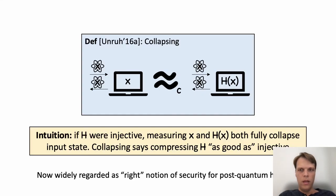When moving to quantum, it turns out that the obvious way to define security is insufficient, and that a stronger notion called collapsing is required in many use cases. The rough idea is that measuring the output of the hash function on a quantum superposition of inputs should be indistinguishable from measuring the input superposition. This is widely regarded now as the right notion of security for post-quantum hash functions.